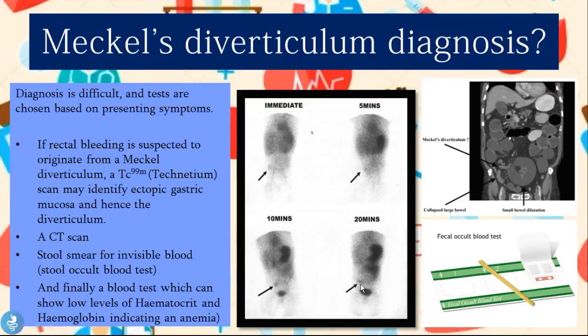A CT scan can also be done, on which you can see an abnormal worm-like structure that is the diverticulum. A stool smear for occult blood tests small samples of stool for any small amounts of blood. Finally, a blood test can show hematocrit and hemoglobin levels indicating anemia — since these patients are prone to bleeding and blood loss, the anemia will be reflected in the blood test results.